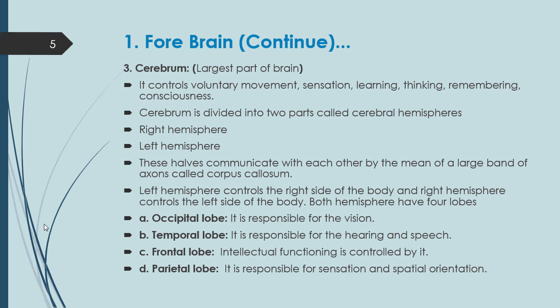The parietal lobe is responsible for sensation and spatial orientation. To summarize: occipital lobe handles vision; temporal lobe handles hearing — auditory nerve transfers auditory information to the temporal lobe; frontal lobe handles intellectual functioning; and parietal lobe handles sensation and spatial concepts.